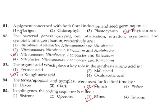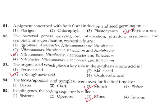Question 81: A pigment concerned with both floral induction and seed germination is phytochrome, which is involved in both floral induction and seed germination. So the correct answer is option 4.